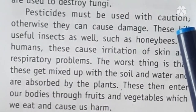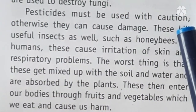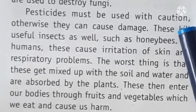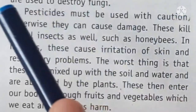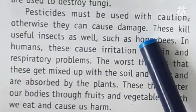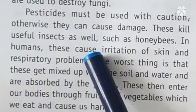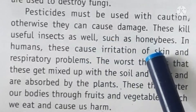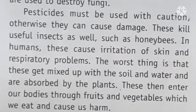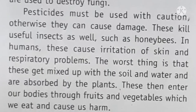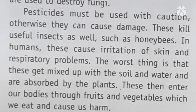We must be cautious when using pesticides. Pesticides are chemicals used to kill pests like rodents and insects. However, they can also cause damage — they kill useful insects as well, such as the honey bee, which is very important to our environment. Excess pesticides can cause the death of beneficial insects.